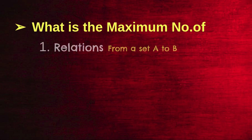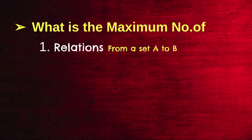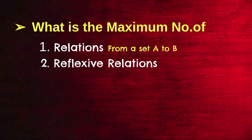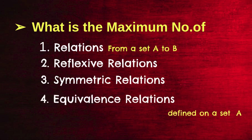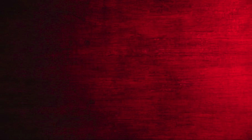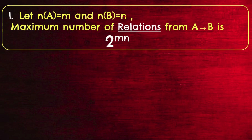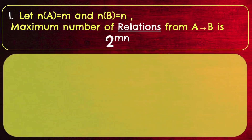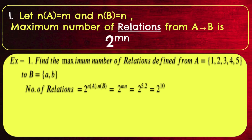What is the maximum number of relations from a set A to set B? And what is the maximum number of reflexive relations defined on a set, and symmetric relations, and what is the maximum number of equivalence relations defined on a set A? Now in detail: suppose the number of elements of A is M and the number of elements of B is N. The maximum number of relations defined from set A to set B is 2 raised to MN.